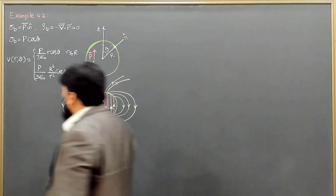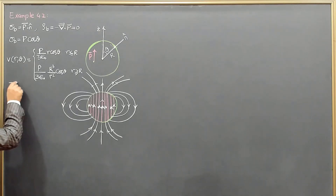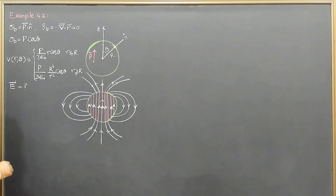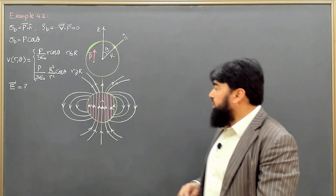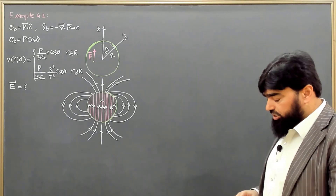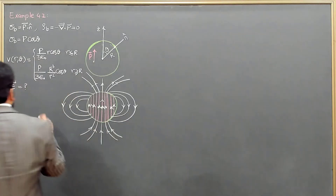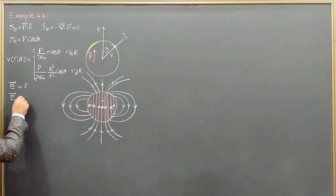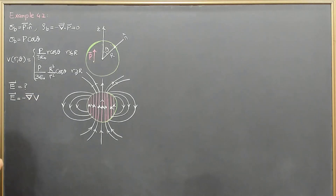Now we need to find the electric field both inside and outside the sphere. We know the relation between the electric field and potential: the electric field is the negative gradient of V.